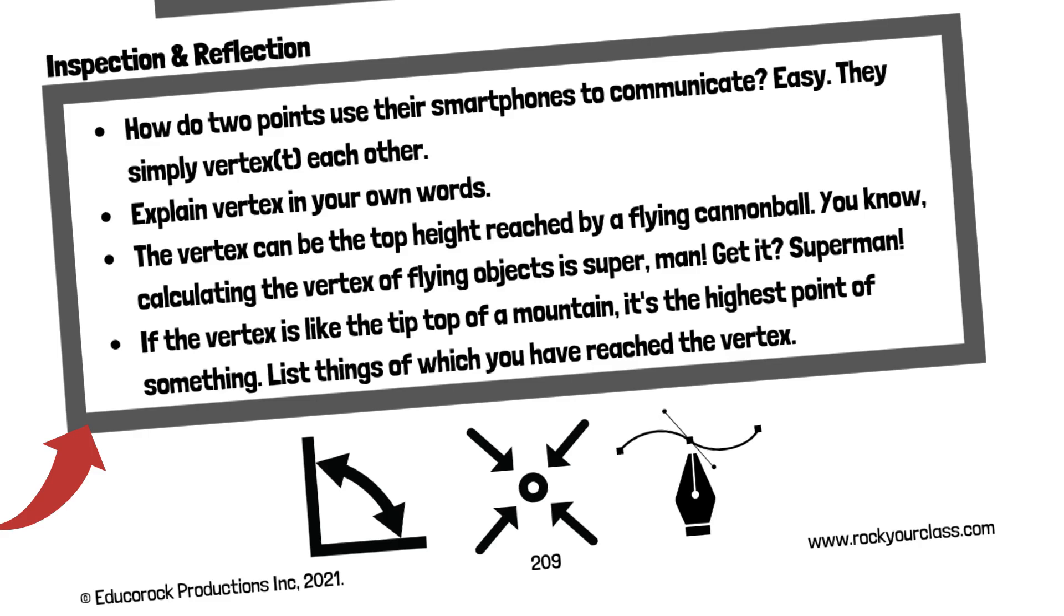Explain vertex in your own words. The vertex can be the top height reached by a flying cannonball. You know, calculating the vertex of flying objects is Superman. Get it? Superman?